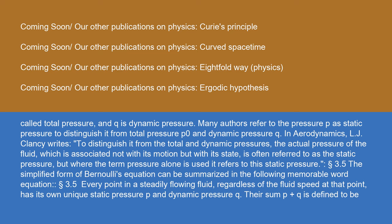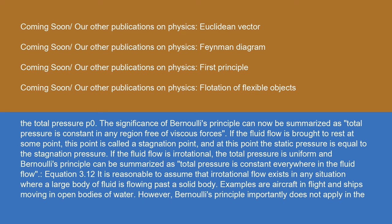The simplified form of Bernoulli's equation can be summarized in the following memorable word equation: every point in a steadily flowing fluid, regardless of the fluid speed at that point, has its own unique static pressure p and dynamic pressure q. Their sum p + q is defined to be the total pressure p₀. If the fluid flow is brought to rest at some point, this point is called a stagnation point, and at this point the static pressure is equal to the stagnation pressure.